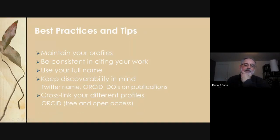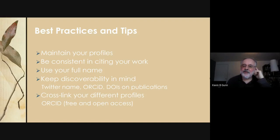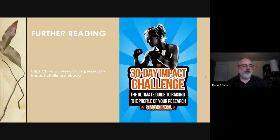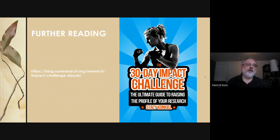Best practices and tips: maintain your profiles and stay on top of them. Be consistent in citing your work across various platforms — use your full name, since ORCID can bring different name variations under one umbrella. Keep discoverability in mind: your Twitter name, ORCID ID, DOI, and publications. Cross-link your different profiles in ORCID for free and open access. If you really want to get started, check out the book 'The 30-Day Impact Challenge,' which helps you set up your profiles across Google and websites.